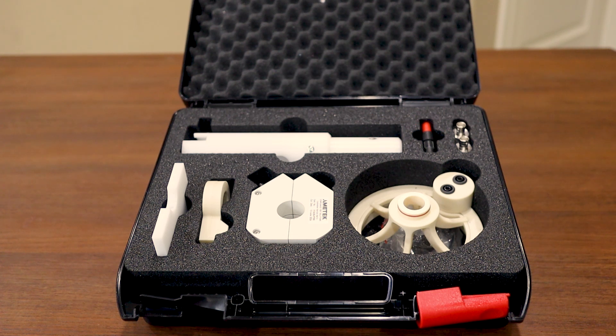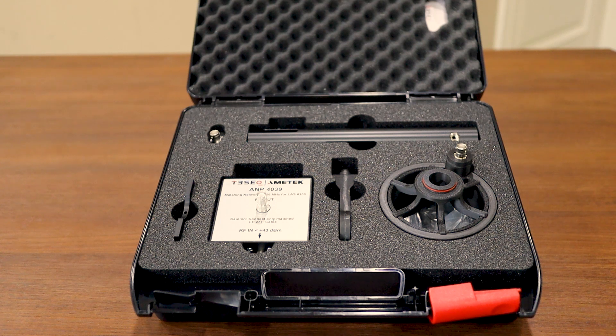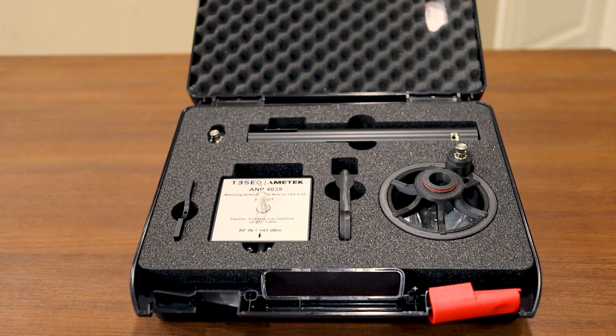Now let's take a look at the LAS6100. The LAS6100 radiating loop antenna kit and sensor has a frequency range of 150 kHz to 30 MHz, meeting the testing requirements of IEC 61000-4-39 and IEC 60601-1-2. This kit uses the RLA6100-3 radiating loop as well as the ANP4039 adapter to allow for more field strength at 13.56 MHz as required by IEC 60601-1-2. Let's walk through some of the different components that are included.